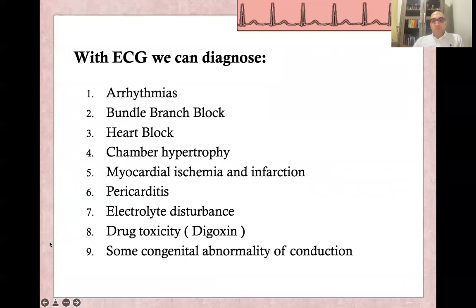With ECG, we can diagnose all types of arrhythmia. Bundle branch block, heart block, and chamber hypertrophy can also be diagnosed by ECG, though the gold standard remains echocardiography. Myocardial ischemia and infarction — including ST-elevation myocardial infarction — can be identified. Pericarditis, some electrolyte disturbances such as potassium or calcium abnormalities, drug toxicity such as digoxin or tricyclic antidepressants, and some congenital abnormalities of conduction can all be diagnosed with ECG.